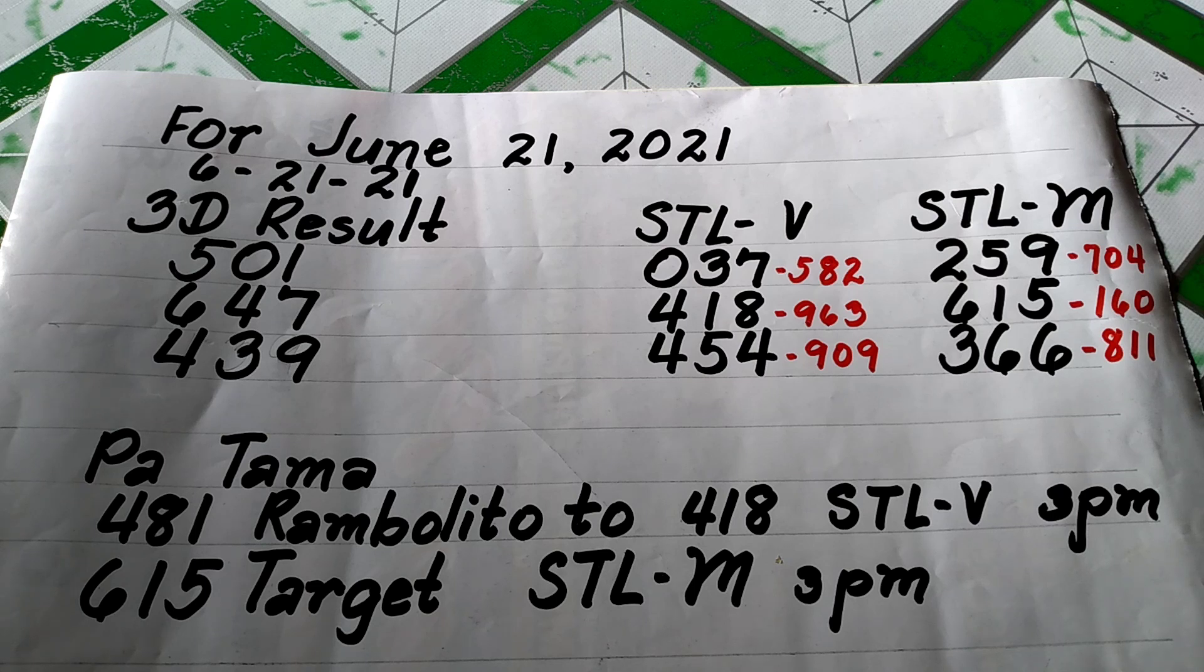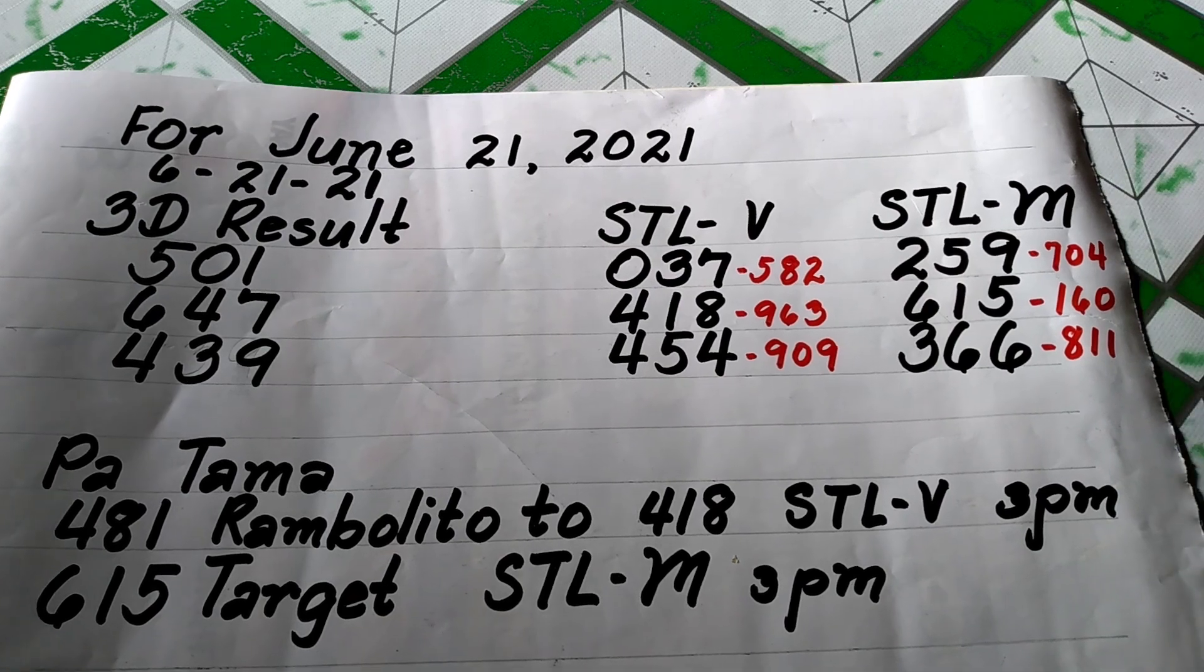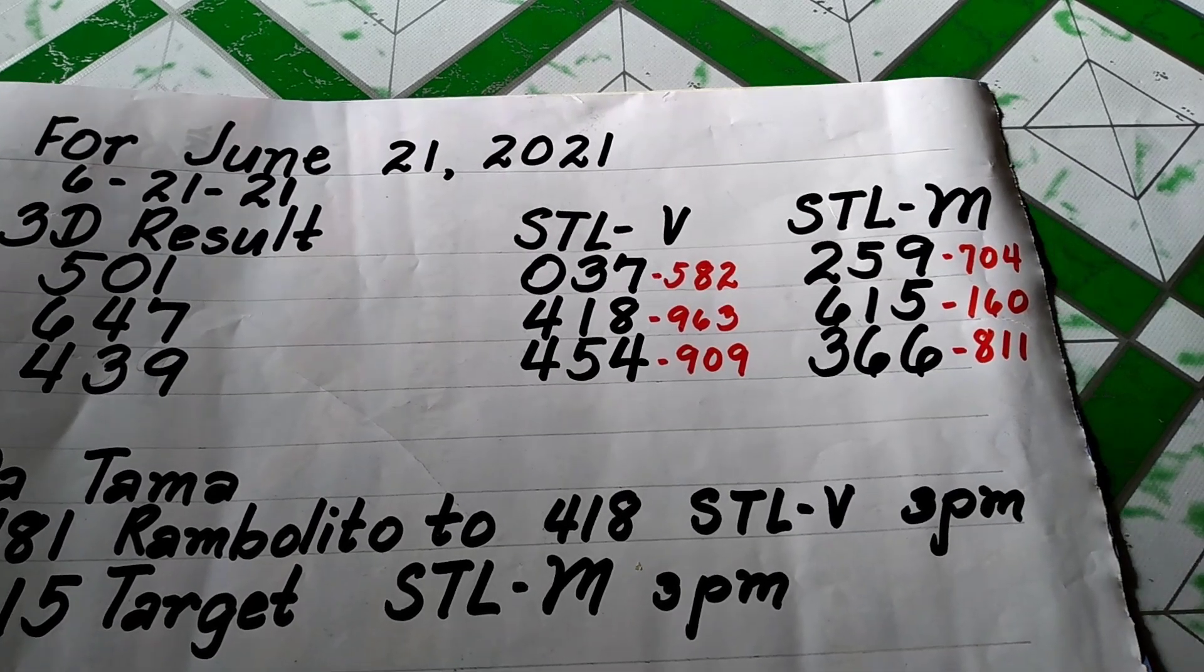Ang numerical equivalent naman ng 0-3-7 ay 5-8-2, ang numerical equivalent ng 4-1-8 is 9-6-3, at saka yung numerical equivalent ng 4-5-4 is 9-0-9.